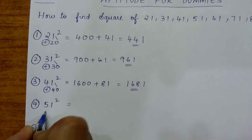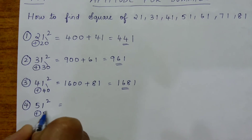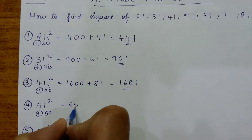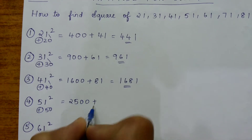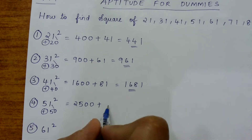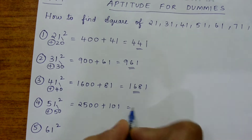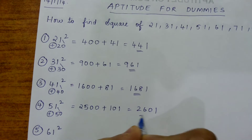Now 51 square — it is one more than the perfect square 50, which gives 2500, plus 50 plus 51, that is 101, which equals 2601.